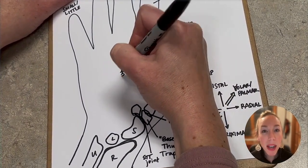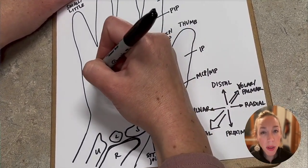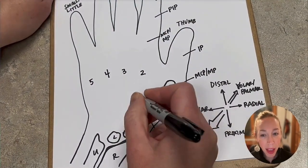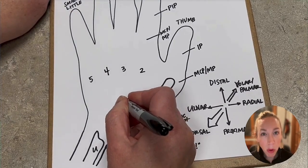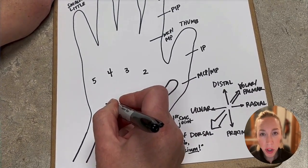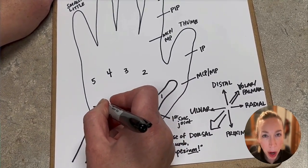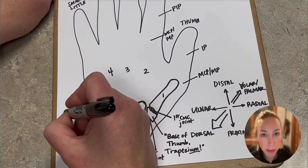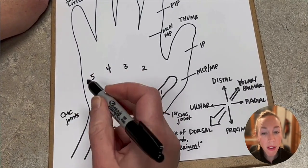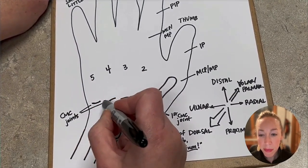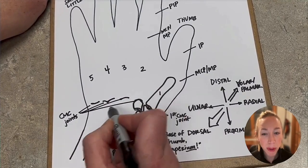For the metacarpals, we number them, or we can call them what they are in the ray that they are. So instead of, you could say second metacarpal or index metacarpal. You could say fifth metacarpal or small metacarpal. These little lines here are the CMC joints. And we do number these one through five also for the carpal metacarpal joints.